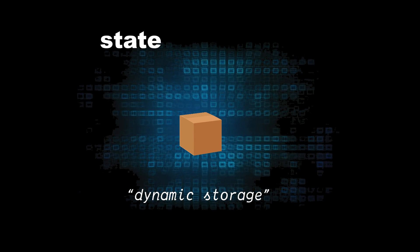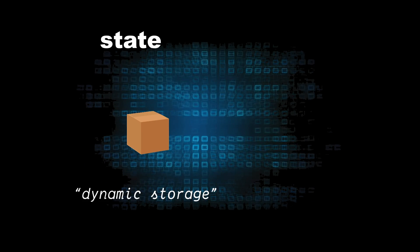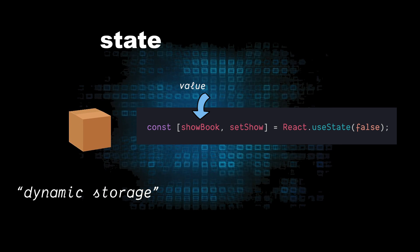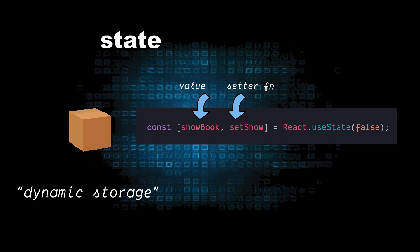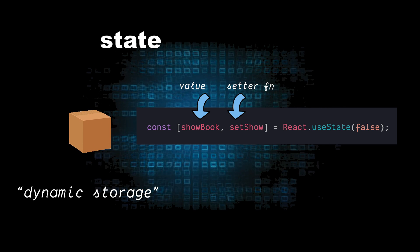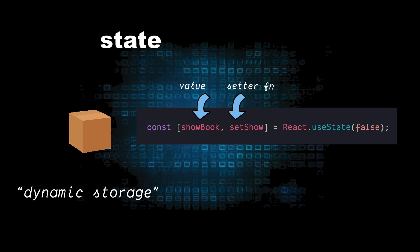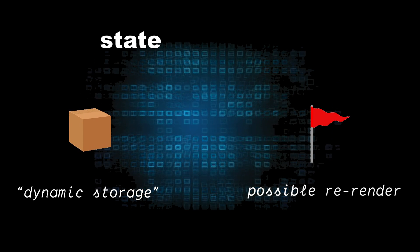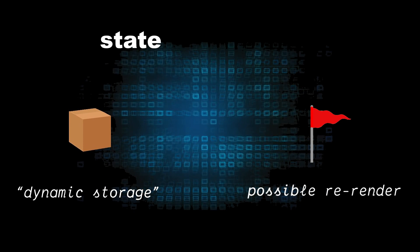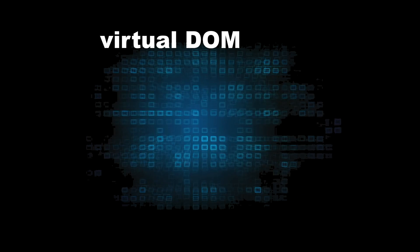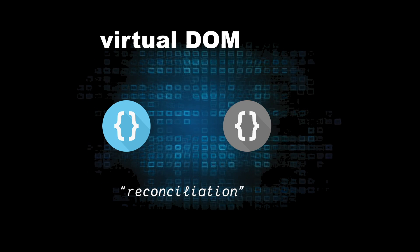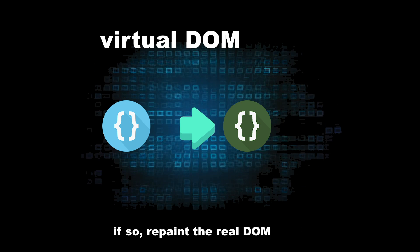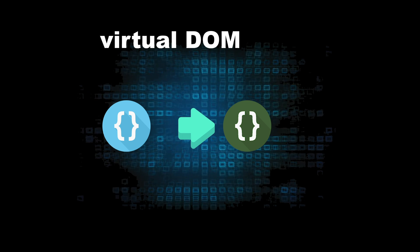Let's talk about state, a dynamic form of storage that lives inside of our components. The 2020 way to create state is with a useState hook, which returns a value and a setter function. This is returned in an array of size two, so we destructure them into individual variables. State is dynamic storage because every time a state variable changes, our component gets flagged for a potential re-render. This is where the magic of React comes in — React holds a separate DOM representation called the virtual DOM, then compares it against the real DOM with a reconciliation algorithm to efficiently determine whether the page has to be updated or not, and efficient updates mean your page runs faster.